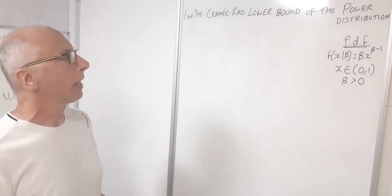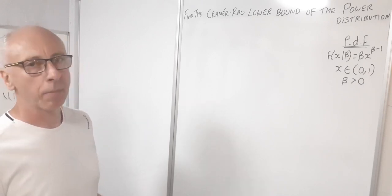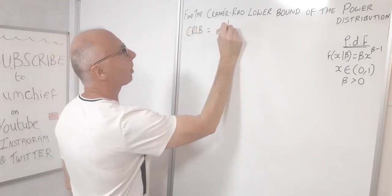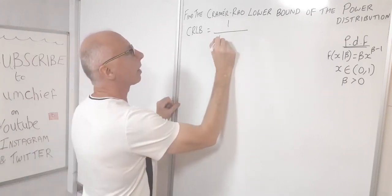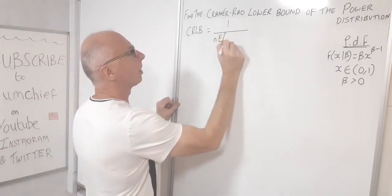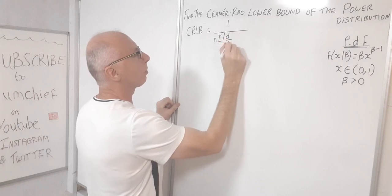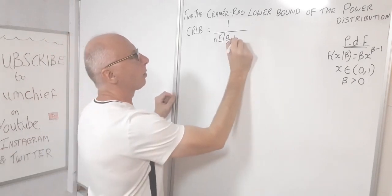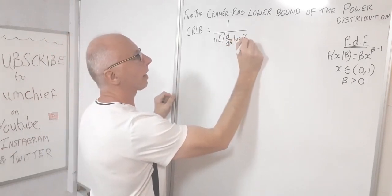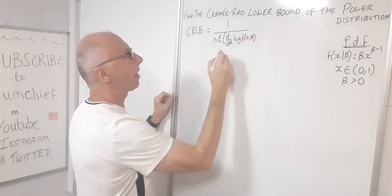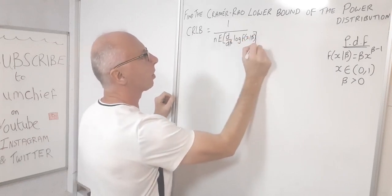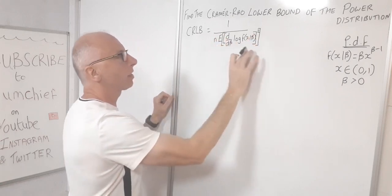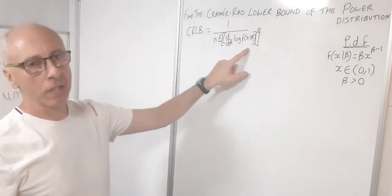In the previous video we did a video on the Cramér-Rao lower bound, and we found that to be the equivalent of 1 over n times the expectation of the derivative with regards to β of the log of f(x|β), squared.